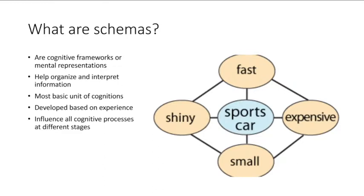Schema theory — or schemas rather — are cognitive frameworks and mental representations that help us organize and interpret information around us. Our environment is full of stimuli and information which can often make us feel quite overwhelmed. So we have systems such as schemas in place so that we can represent them in basic units. In that sense, schemas are the most basic unit of cognition. They're simple and representative of our experiences in small snapshots.